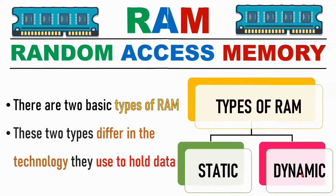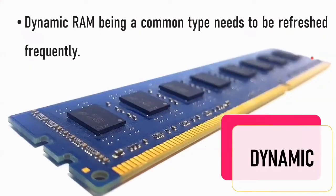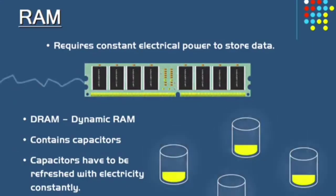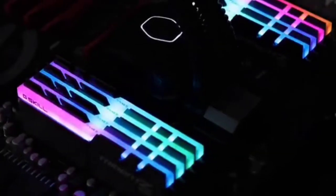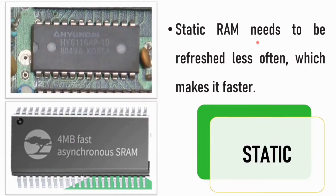Dynamic RAM, being a common type, needs to be refreshed frequently. Static RAM, which is the opposite of dynamic, does not have to be refreshed as frequently. Static RAM needs to be refreshed less often, which makes it faster.